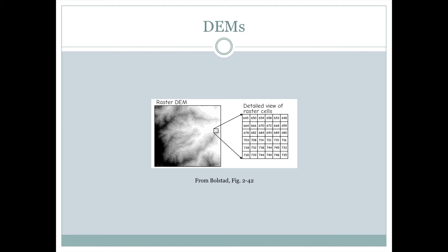When we talk about a DEM in GIS, we're referring to a digital elevation model. A digital elevation model is a grid of elevation values, and this grid is a representation of something that changes as we move from place to place in a fairly rapid manner.